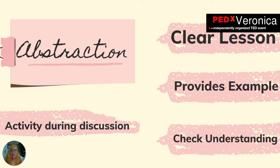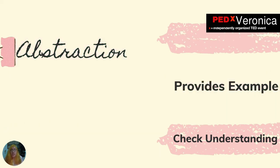In the third component, abstraction, since we are dealing with elementary students, it is important that the teacher presents the lesson clearly and provides ample examples so learners will have a clear grasp. The teacher can also ask students for examples and should regularly check on students' understanding through questions or reiteration of concepts. Since most learners are easily distracted, teachers are encouraged to provide a worksheet or activity that learners can work on during the discussion.